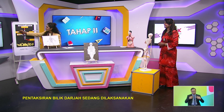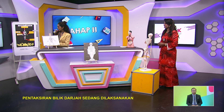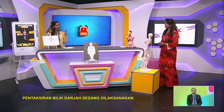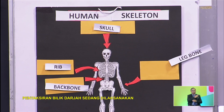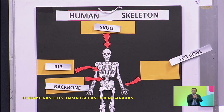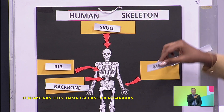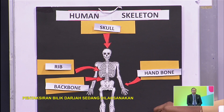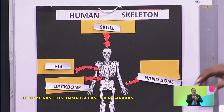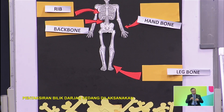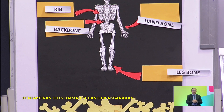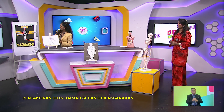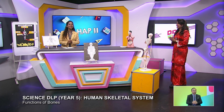It looks like a cage, easier to remember. So this is rib. And then we have skull — skull is the one that always protects our head and brain. So that is skull. And then we have hand bone. And last but not least, leg bone — something without which we cannot walk or move. Since you got five correct, I give you five stars, Divya.